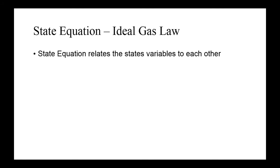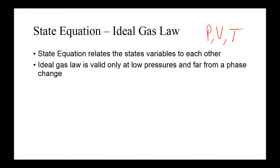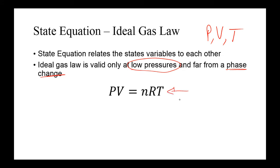If you think back to high school chemistry, you'll remember the ideal gas law has all of these ideas — pressure, volume, and temperature. But remember, the ideal gas law is only valid in certain regions. We're going to be looking at low pressures and far from a phase transition — far from where it goes from a gas to a liquid or a gas to a solid. The state equation is PV = NRT. This is the ideal gas law you saw in your high school chemistry class.